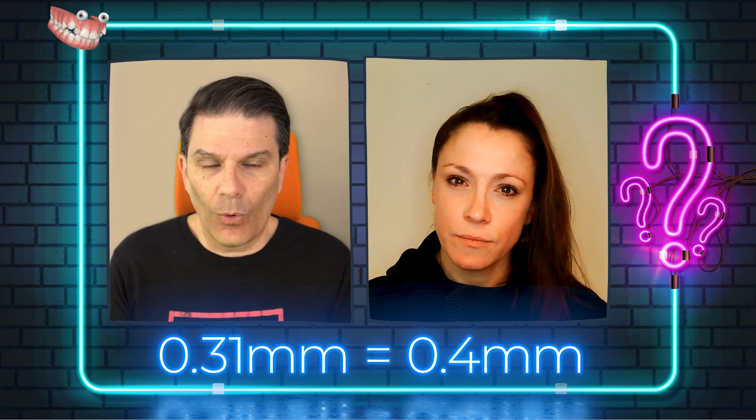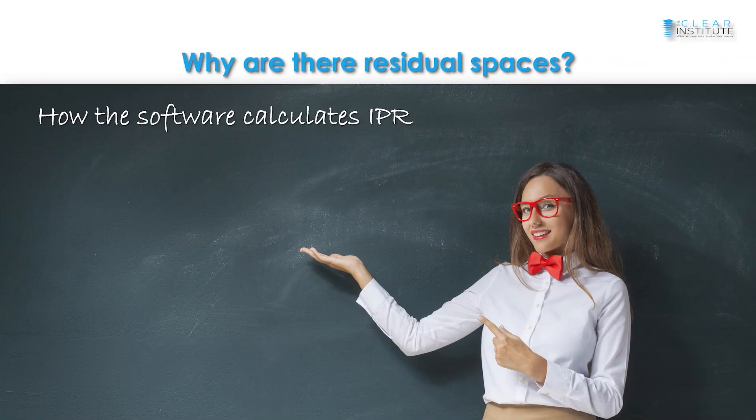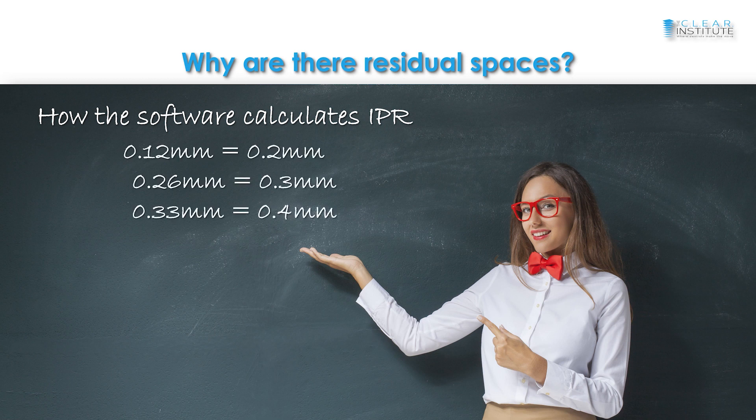If you only have IPR to do in one place it's not a big impact, but let's say you have IPR to do from pre-molar to pre-molar because you have a lot of IPR to do — then if you really remove all the IPR as asked, it can create some space at the end. You might arrive at the last aligner, have all the teeth perfectly aligned, everything looks good, but you have some residual spaces between the teeth.